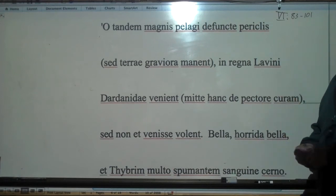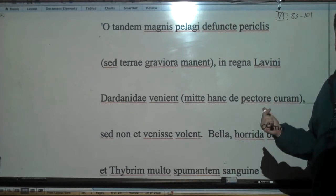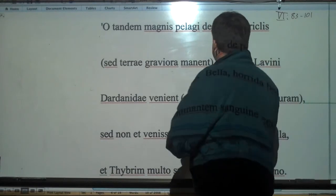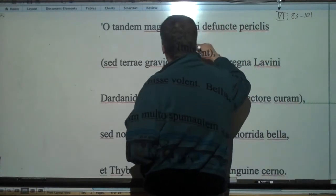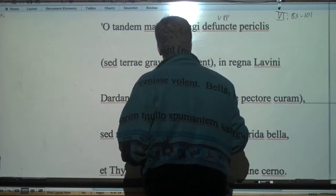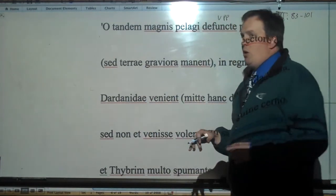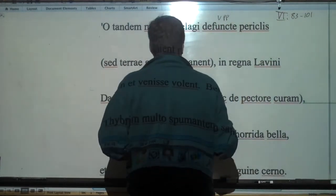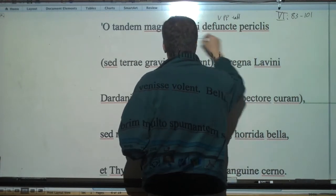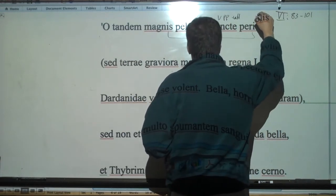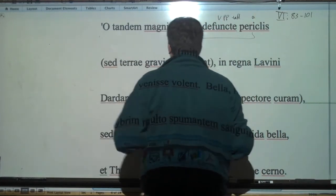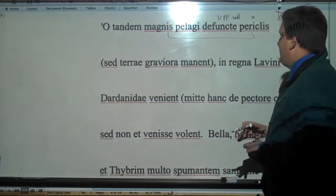So we start off here with O. When you have that O there, it signifies you're going to get evocative. And remember she's talking to Aeneas specifically, of course the Trojans are there. So O Aeneas, defuncti - this is a vocative perfect passive participle of defungor, which is deponent. Having finished the great dangers of the sea, finally. So O Aeneas, having finished the great dangers of the sea.